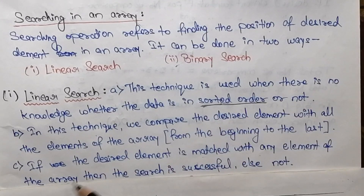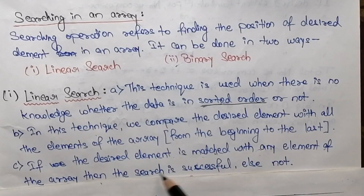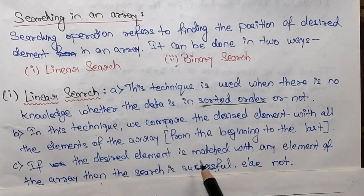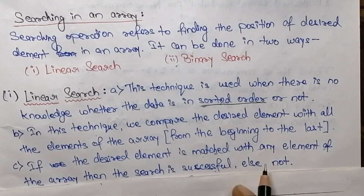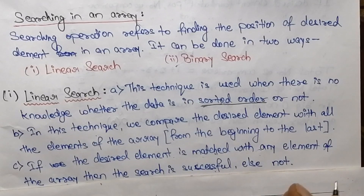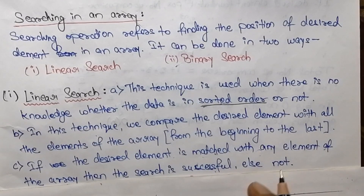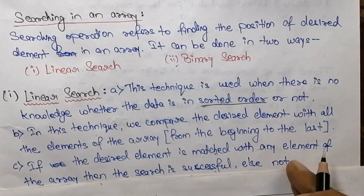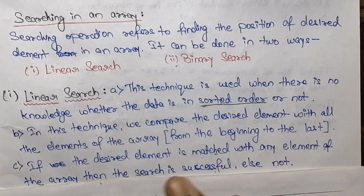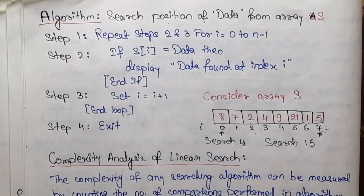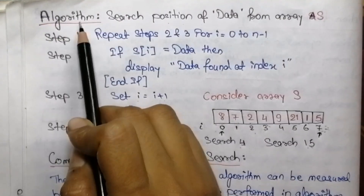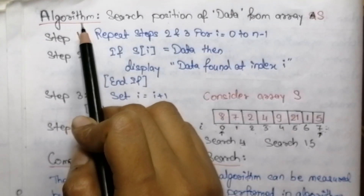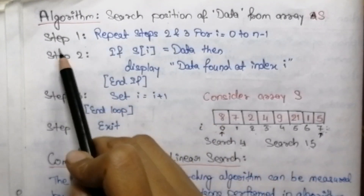This procedure continues until the desired element is found or we reach the end of the array. If the desired element is matched with any element of the array, then the search is successful. If we reach the end of the array without a match, then the searching is unsuccessful and there is no element which matches the desired element.